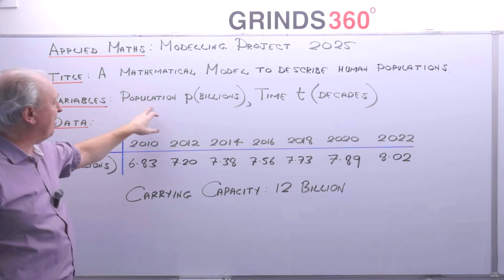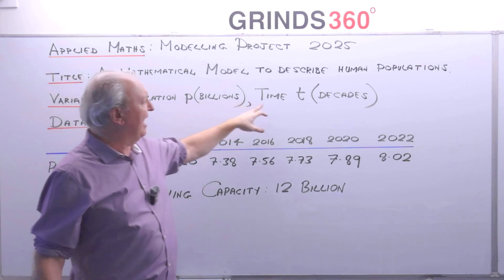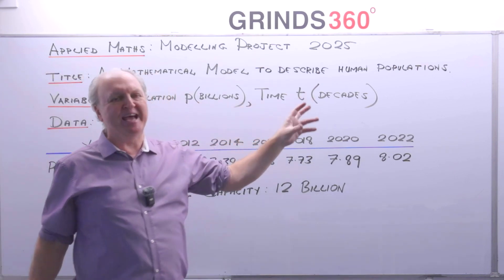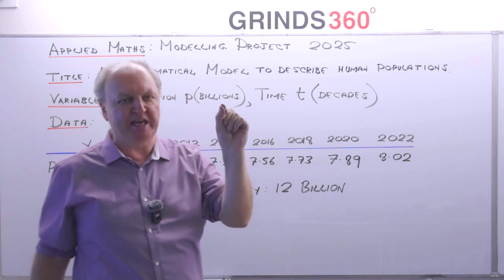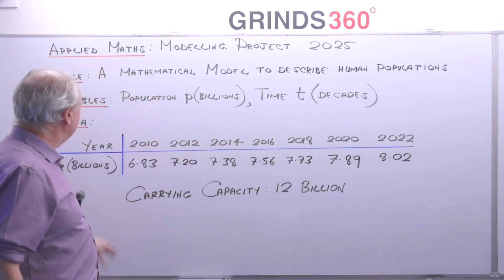So the title of my project is a mathematical model to describe human populations. My variables are population p which I have in billions and time t which I'm going to put in decades. I just thought years were too close together to see proper trends.